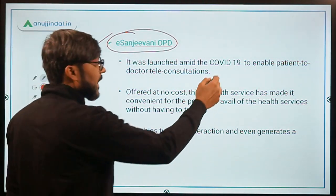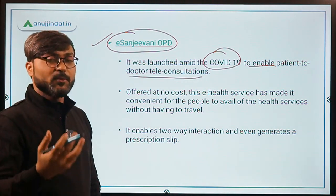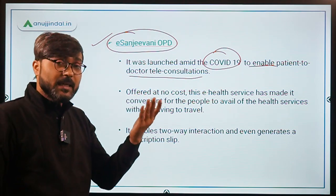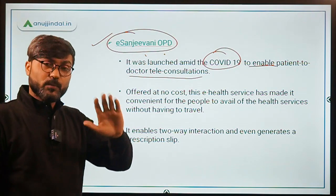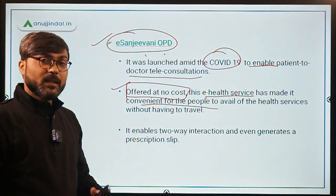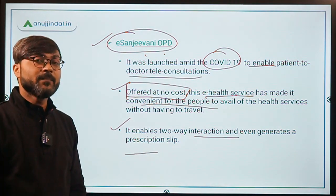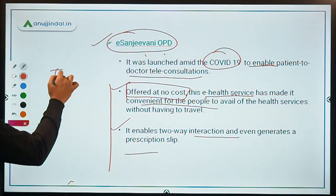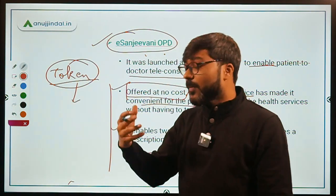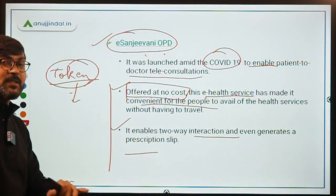E-Sanjeevni OPD was launched during the pandemic. It connected private doctors so that people who couldn't access government services could still get help. It is offered at no cost. This e-health service enables two-way interaction and generates a prescription slip. A token is generated and validated once the prescription has been generated.